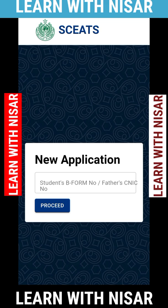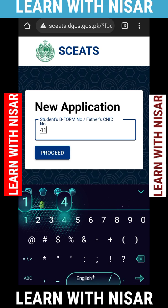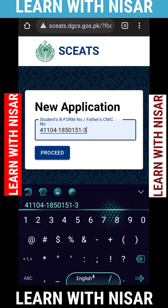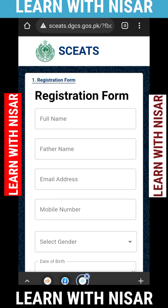After clicking new application, you will see a form where you have to enter your father's CNIC number. Don't get confused — if you have your father's CNIC number, put it in the box. After entering the CNIC number, click on 'Proceed'.